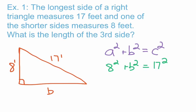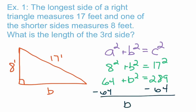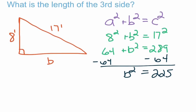We should have 8 squared memorized — that gives us 64. So 64 plus B squared equals... if you don't have 17 squared memorized, that's okay, you can use a calculator. Earlier in the year I expect you to memorize up to 15 squared, so 17 squared is fine to use a calculator on. 17 squared gives us 289. Now we subtract 64 from both sides and get B squared equals 225. Then we take the square root of both sides — the square root and the second power cancel — giving us B equals 15.